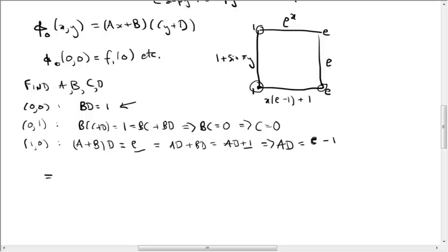Okay, so this tells us that phi_0 of (x,y), which is (ax plus b) times (cy plus d)... The cy vanishes, so we just multiply everything by d, so this is ad times x plus bd. And we know ad is e minus 1, so this is (e minus 1) times x plus bd, and bd is equal to 1.